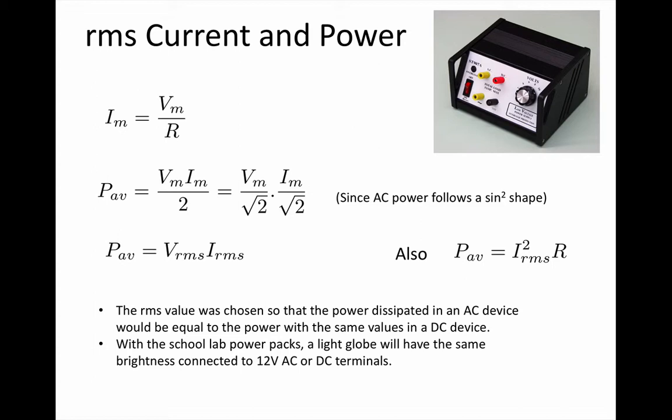Now to work out RMS current and hence AC power. The maximum current is going to be the maximum voltage over R according to Ohm's law. And power, which is voltage times current, has a sine squared shape since both voltage and current are sine waves.